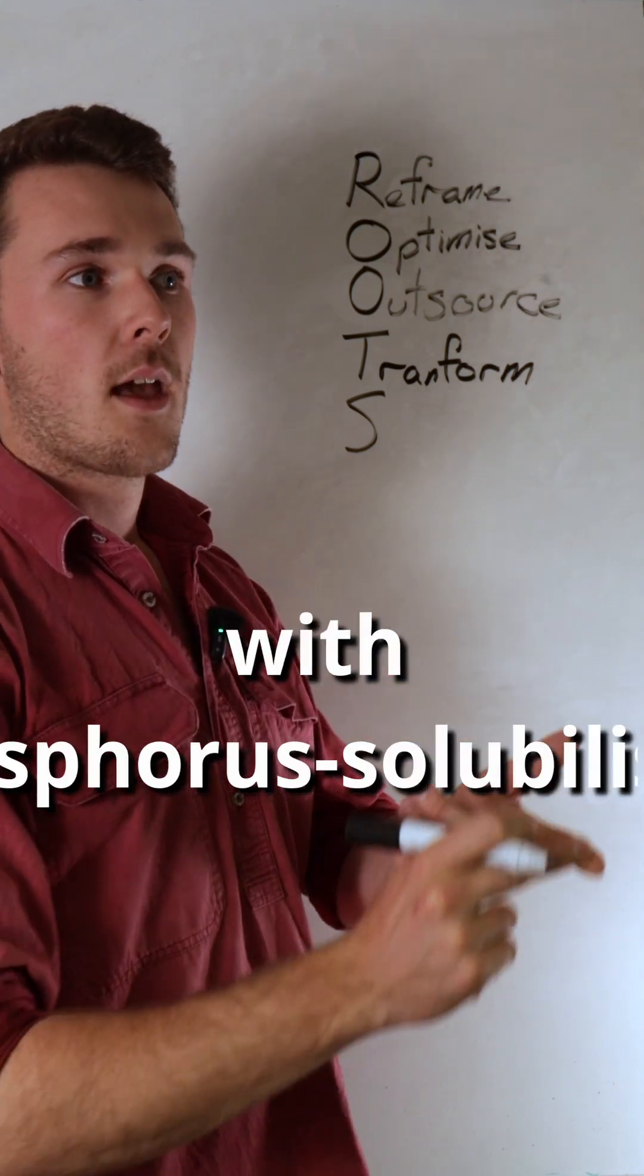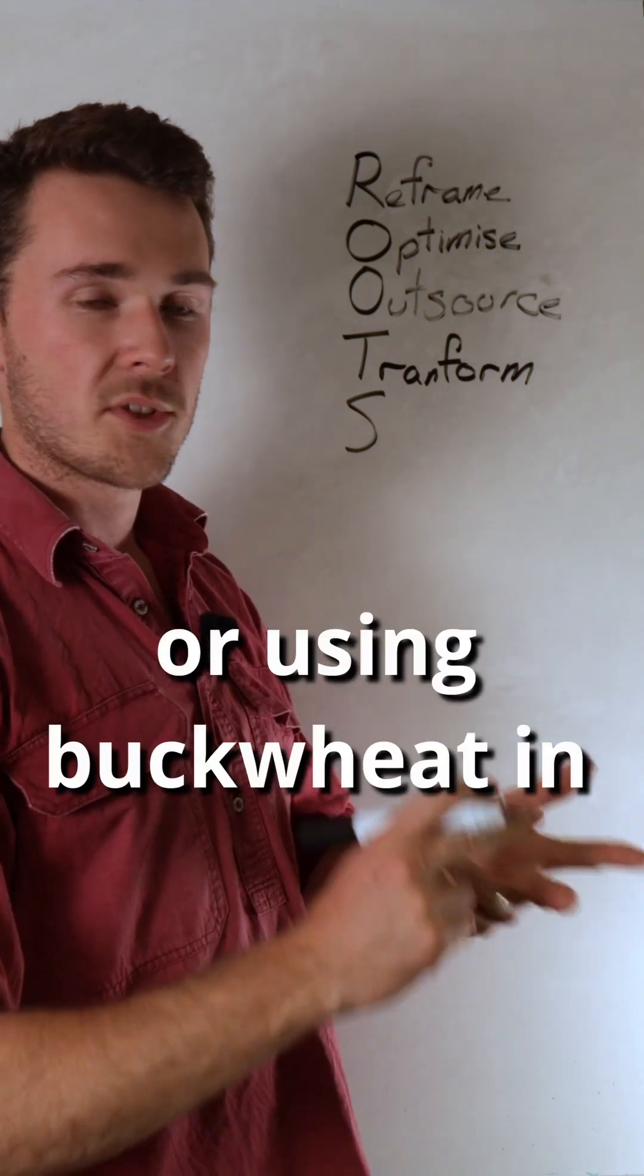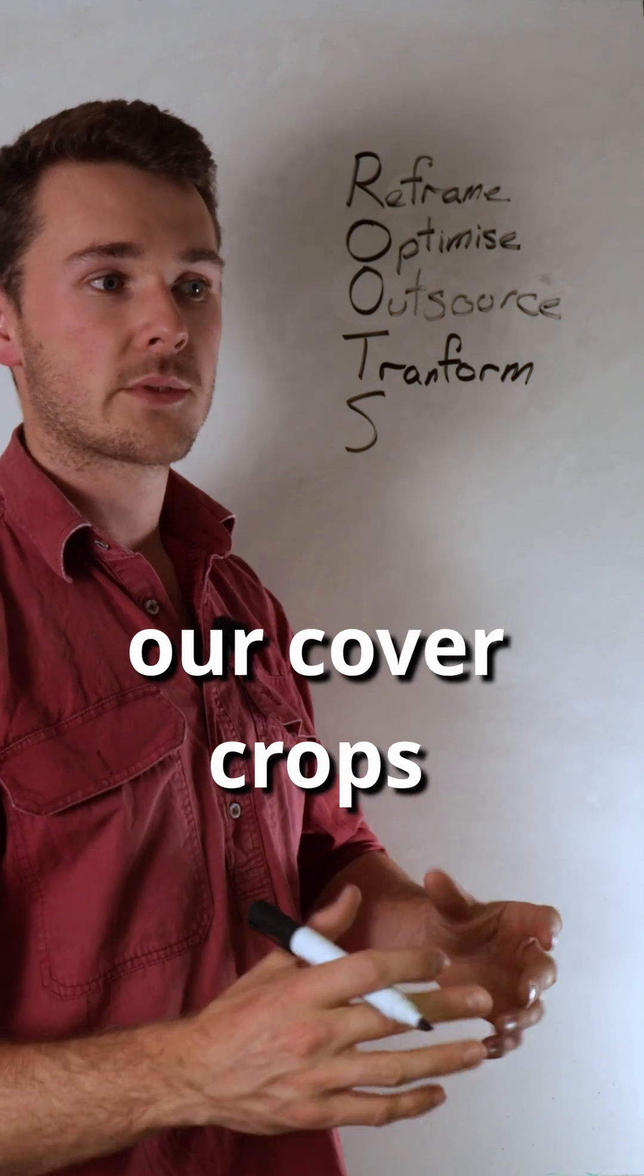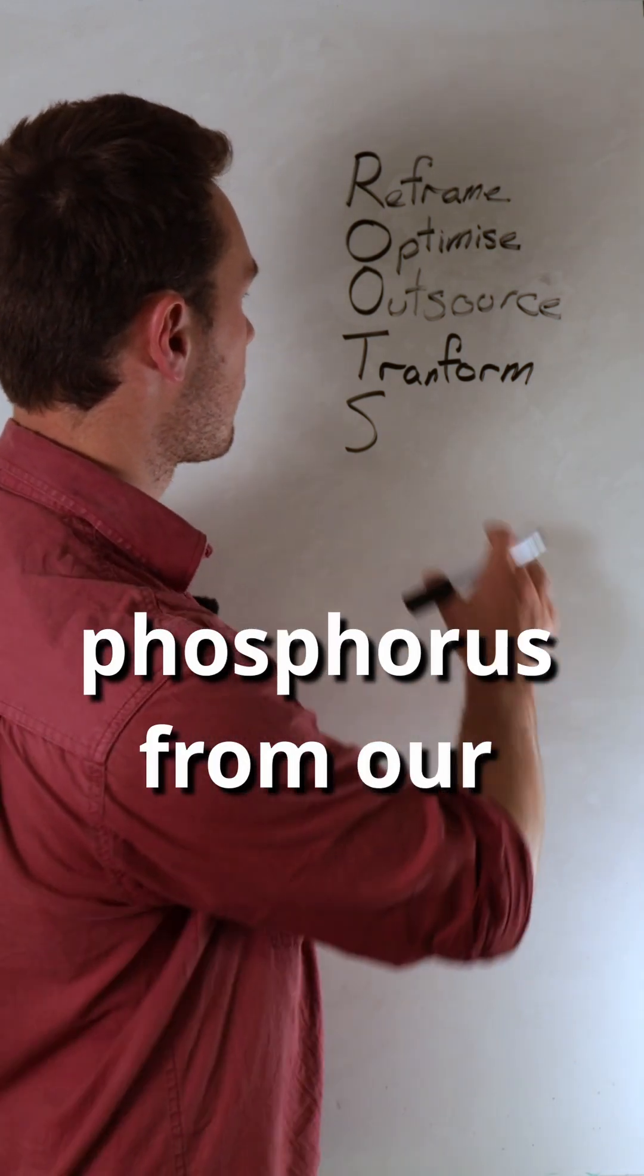This might be things like inoculating with phosphorus-solubilizing bacteria or using buckwheat in our cover crops to release phosphorus from our soil.